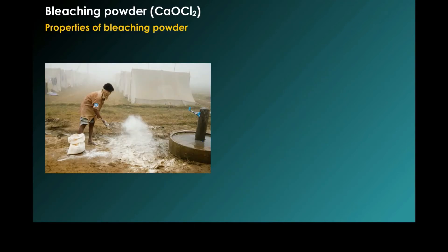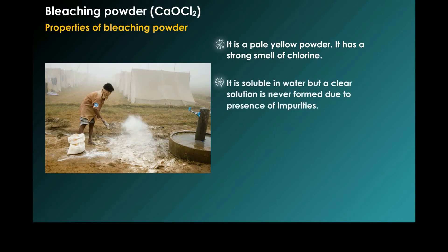Properties of bleaching powder: It is a pale yellow powder. It has a strong smell of chlorine. It is soluble in water, but a clear solution is never formed due to the presence of impurities. It loses chlorine by the action of carbon dioxide.